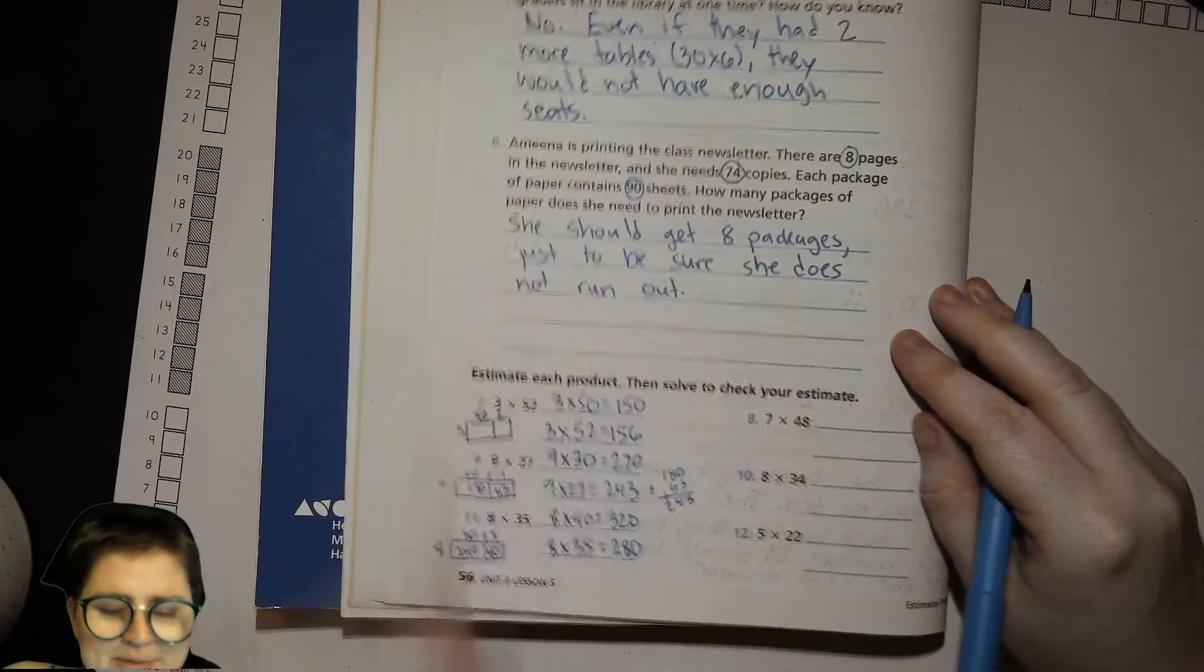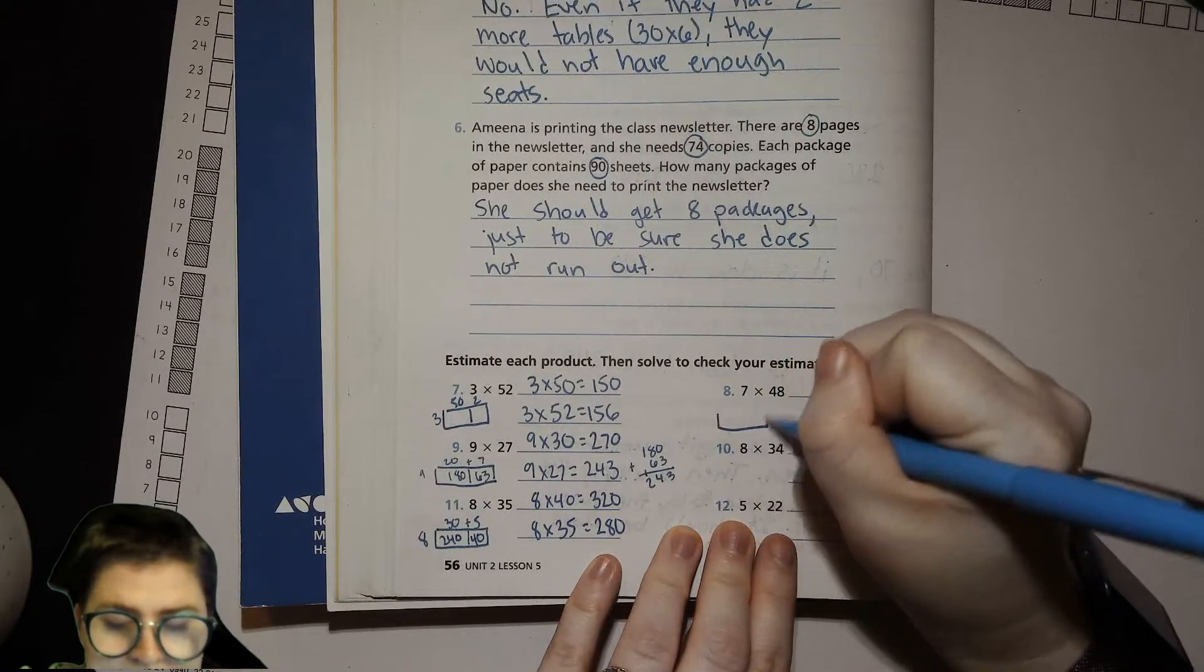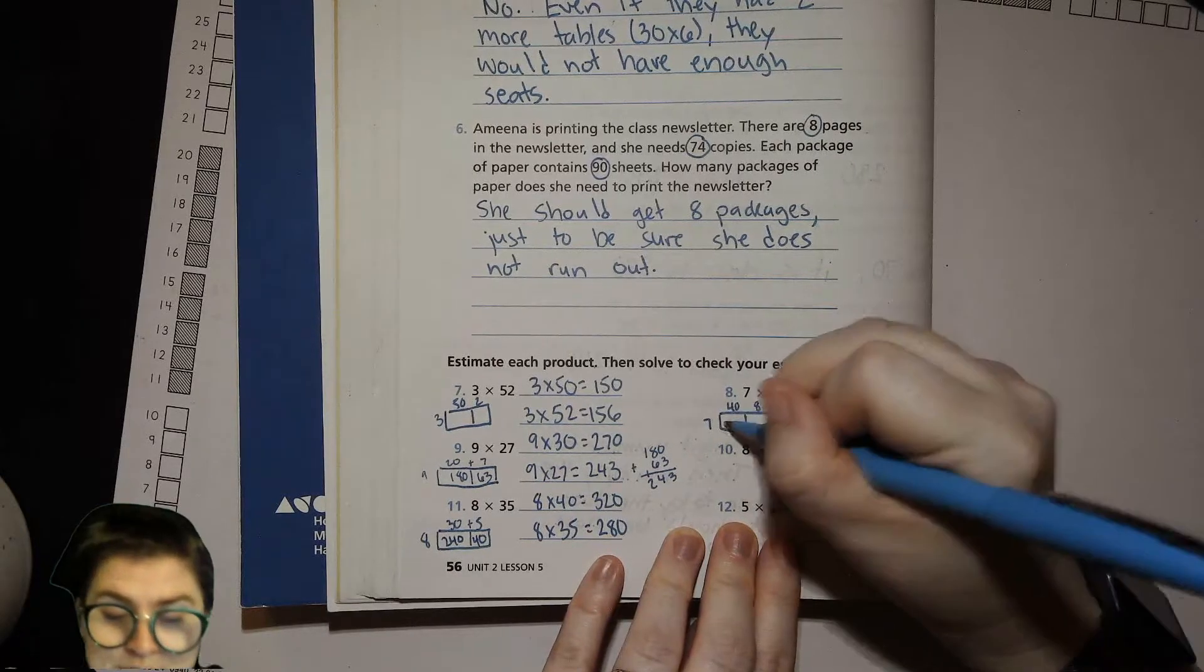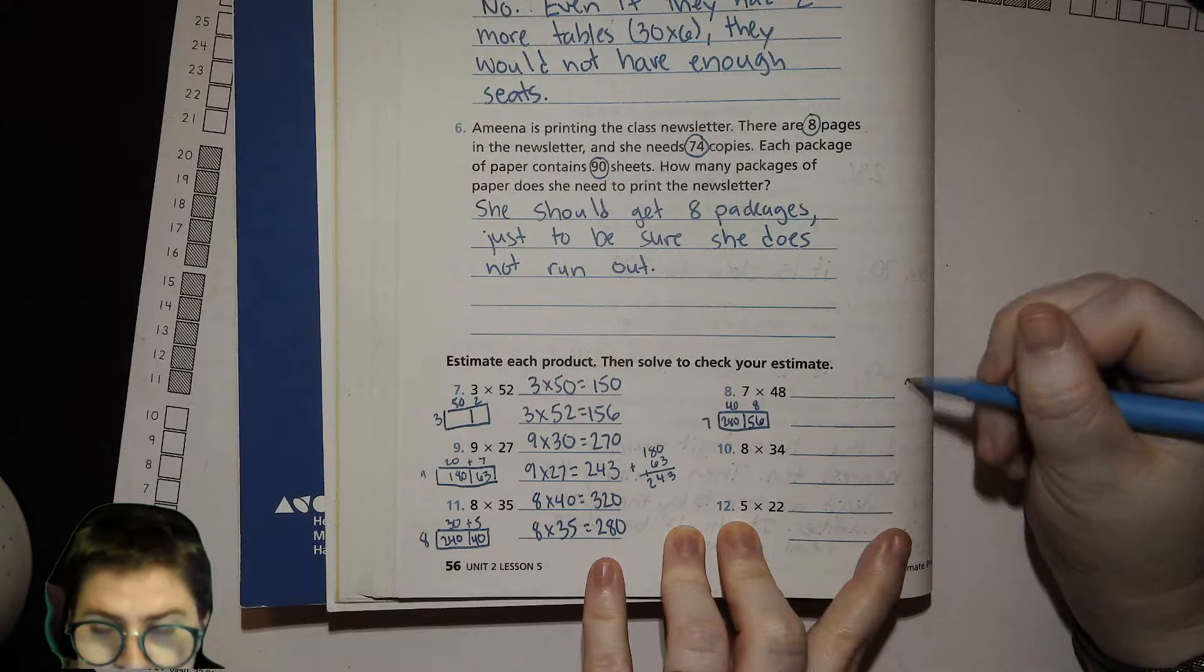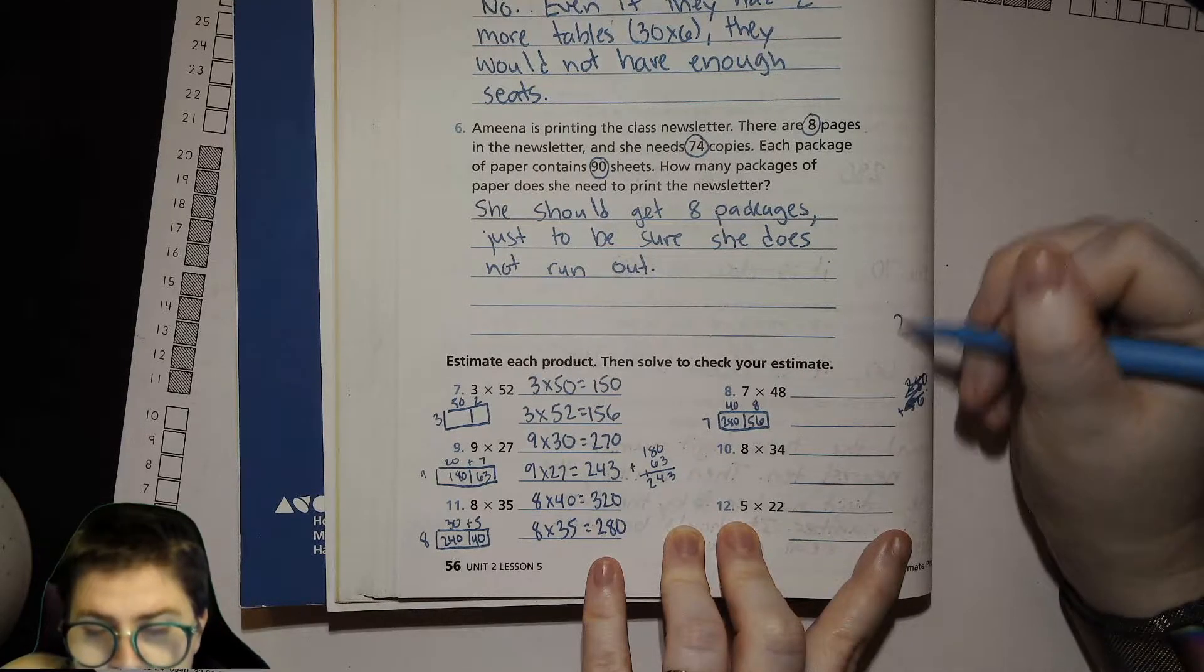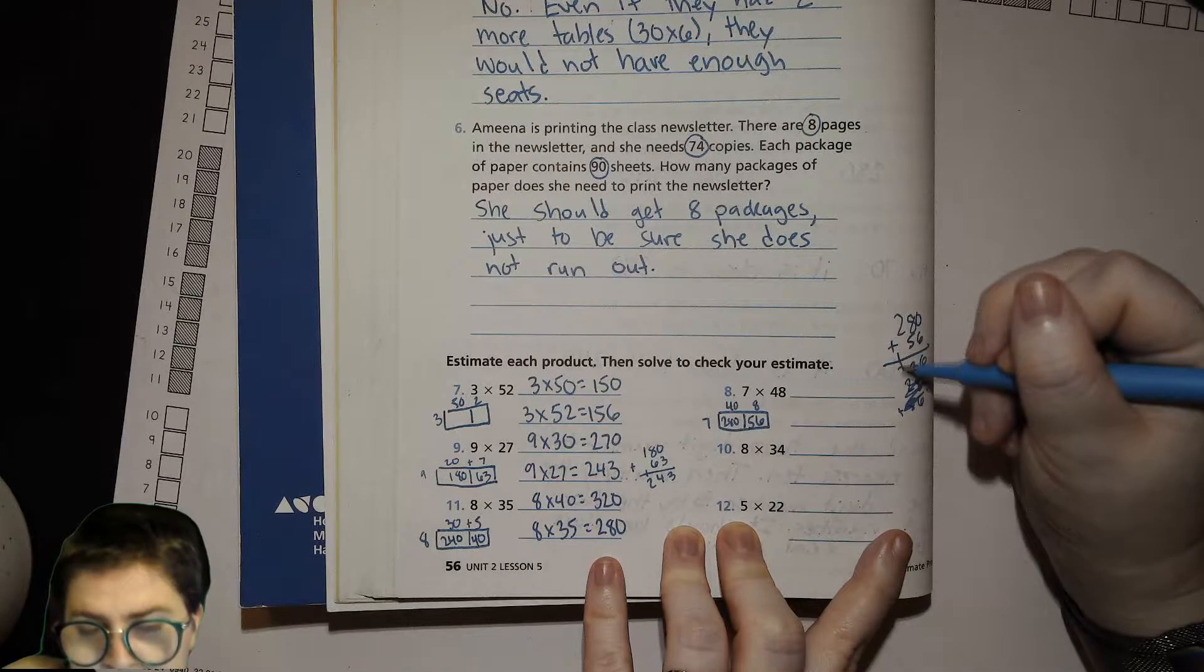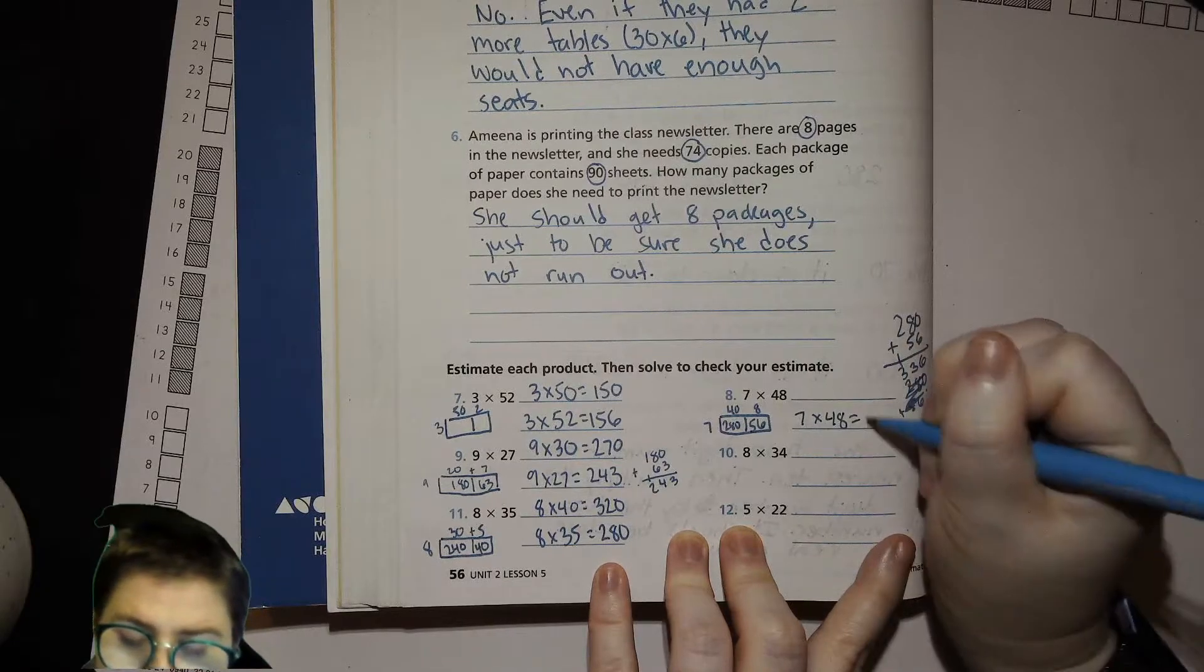Oh, I realized I should have gone over here, but I just went down. That's fine, doesn't matter. All right, let's do this one. 7 times 48. 40 and 8, 7. 7 times 4 is 28, or sorry, 7 times 4 is 28 times 10, 280. 7 times 8 is 56. 280 plus 56. Oh, I lined that up wrong. 280 plus 56. 0 plus 6, 8 plus 5, 13. So the real answer equals 336.